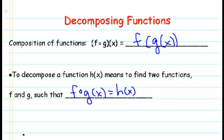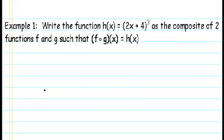Now this is best explained with an example. In our first example, we're asked to write a function h of x equals the quantity 2x plus 4 raised to the third power as the composite of two functions, f and g of x, such that f circle g of x equals h of x. Our task is to find a function f of x and a function g of x so that this statement is true.